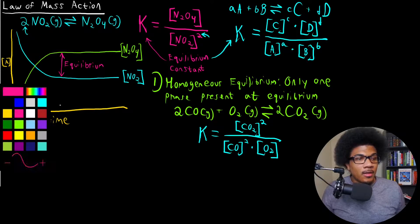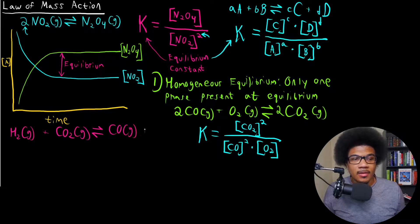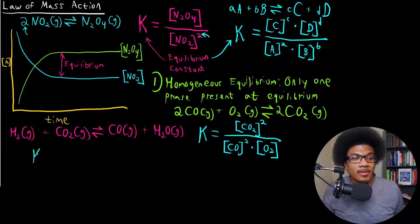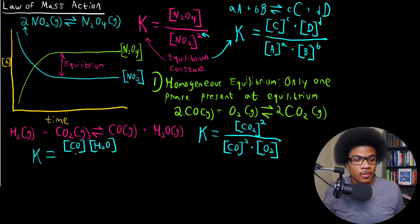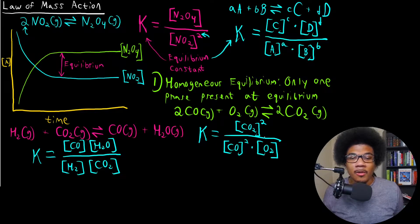Let's look at another example: H2(g) + CO2(g) in a reversible reaction forming CO(g) + H2O(g) — water vapor. Again, all species are gases, so this is a homogeneous equilibrium. The equilibrium constant expression is: K equals the concentration of CO times the concentration of H2O, over the concentration of H2 times the concentration of CO2. Notice that none of these species have stoichiometric coefficients other than 1, so there are no exponents in this expression. All exponents come from the stoichiometric coefficients in the balanced chemical equation.